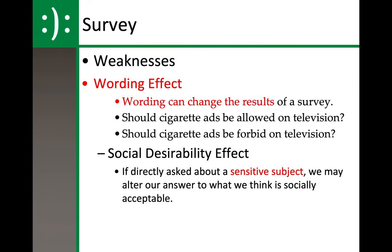What is the weakness? Wording effect. The way things are worded — especially in political polls and surveys — can change the results massively. For example: 'Should cigarette ads be allowed on television?' versus 'Should cigarette ads be forbidden on television?' Allowed and forbidden are pretty much opposite, but 'forbidden' has a little more punch to it. Then there's the social desirability effect: if directly asked about a sensitive subject, we may alter our answer to what we think is socially acceptable. When sensitive questions are surveyed anonymously, people are more honest; but if our name is attached, it becomes much more difficult.